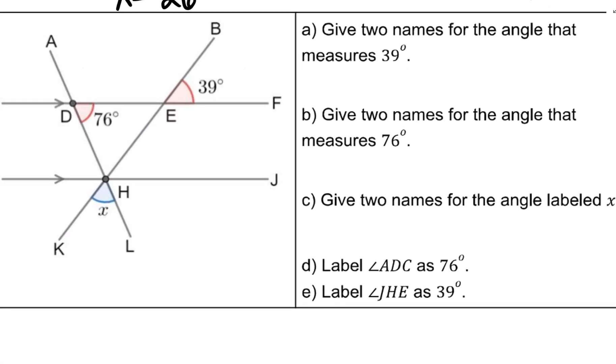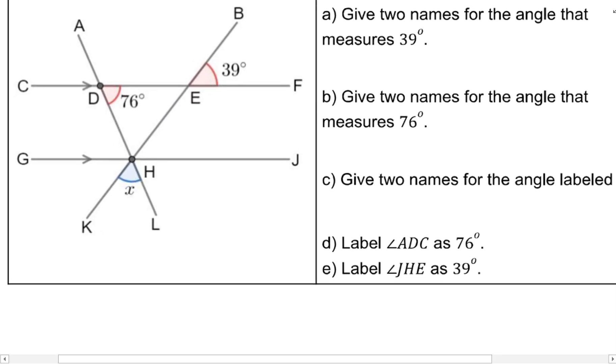Give two names for the angle that measures 39 degrees. 39 degrees is right here. And the three points that I could use to label this angle would be B, E, F. So that could be angle BEF. And a second name, I can't use angle E because there are too many angles coming from the point E. So my second name would just be the opposite order, F, E, B.